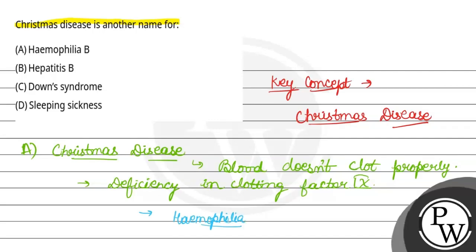The name of the first person in whom Haemophilia was first seen and diagnosed was Stephen Christmas. That is why it is called Christmas disease.